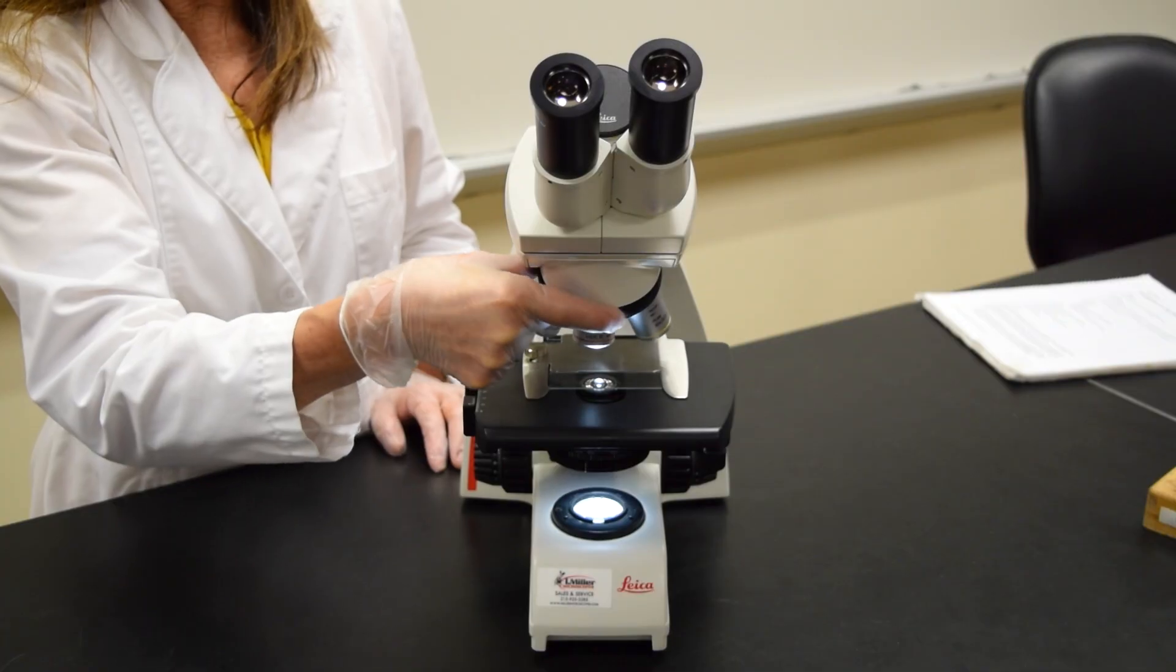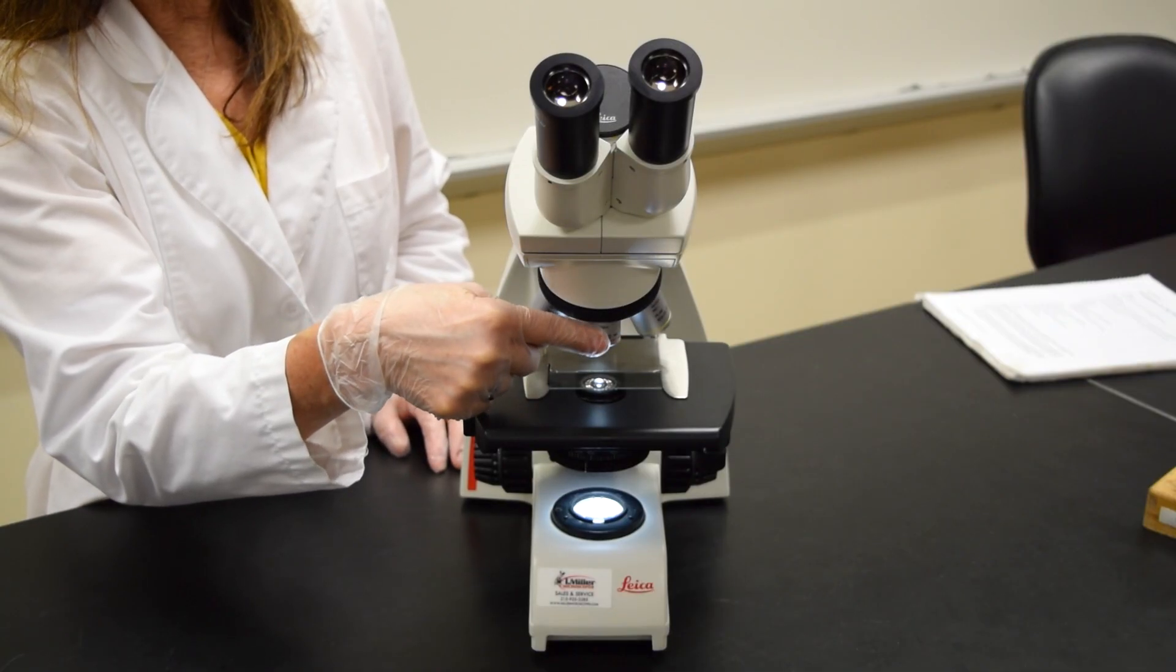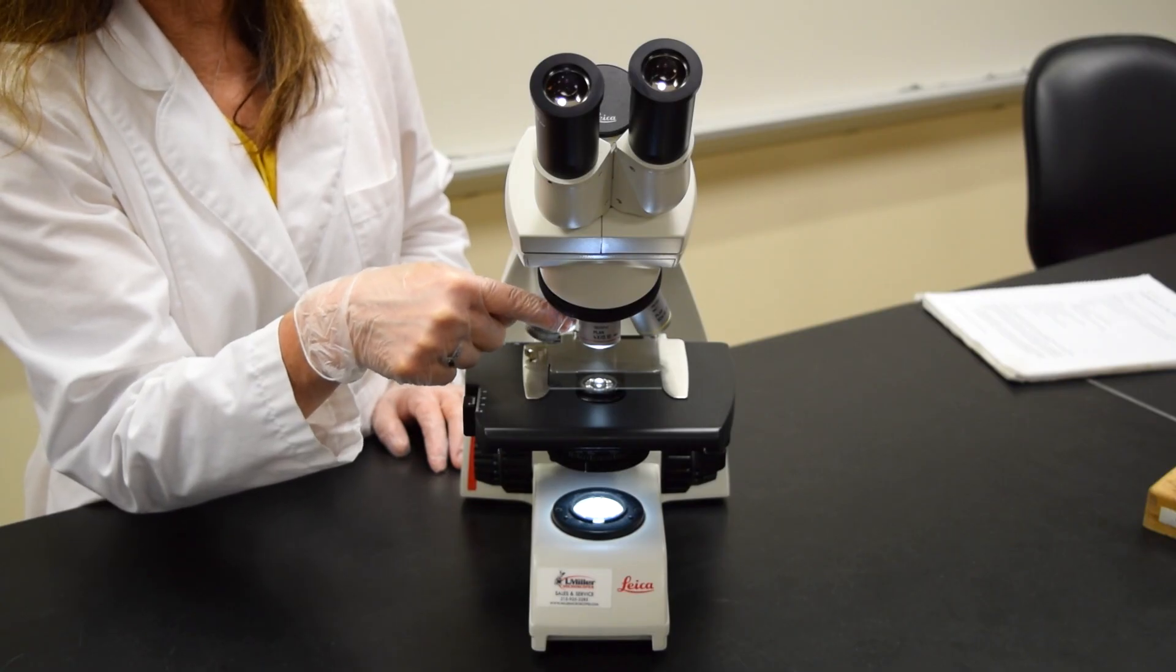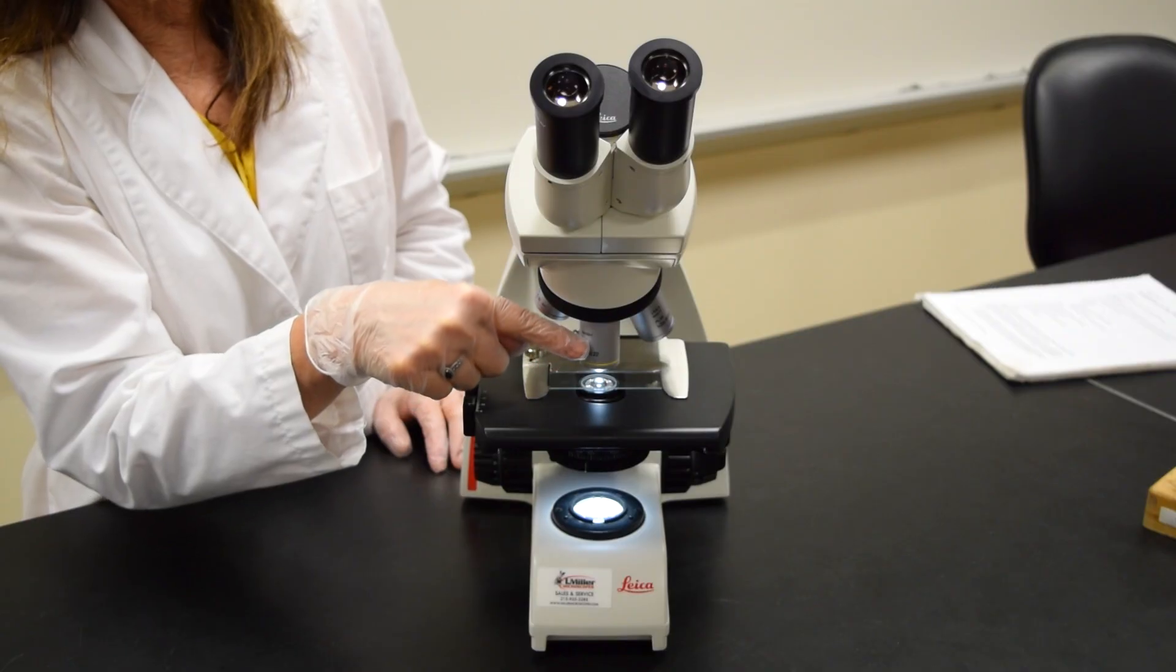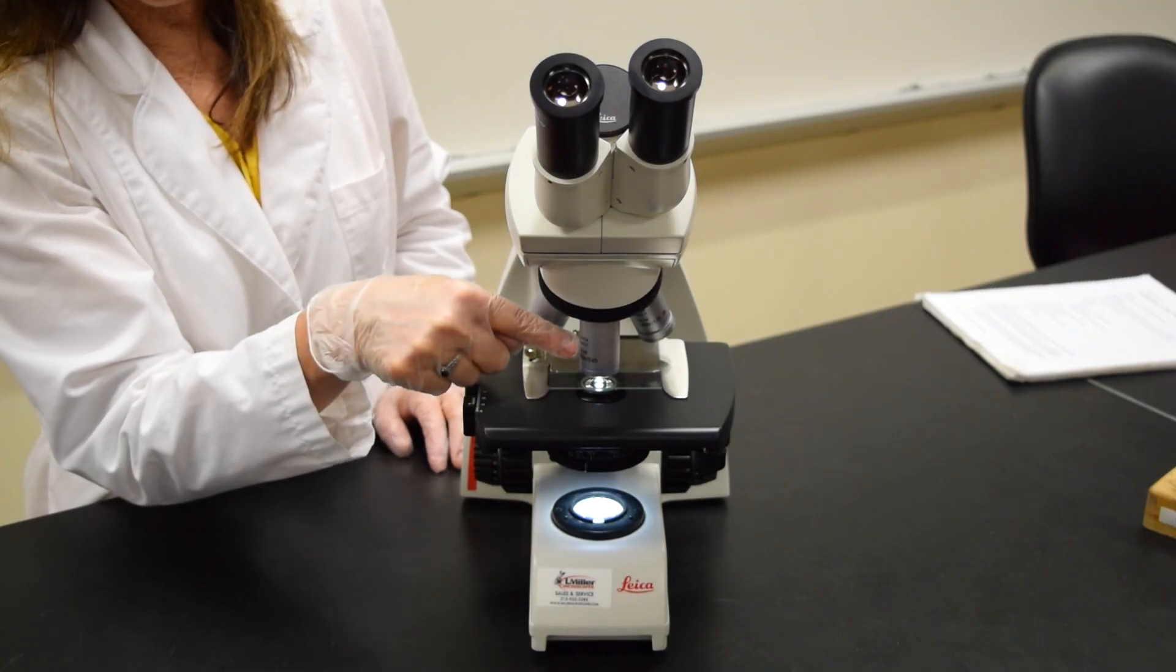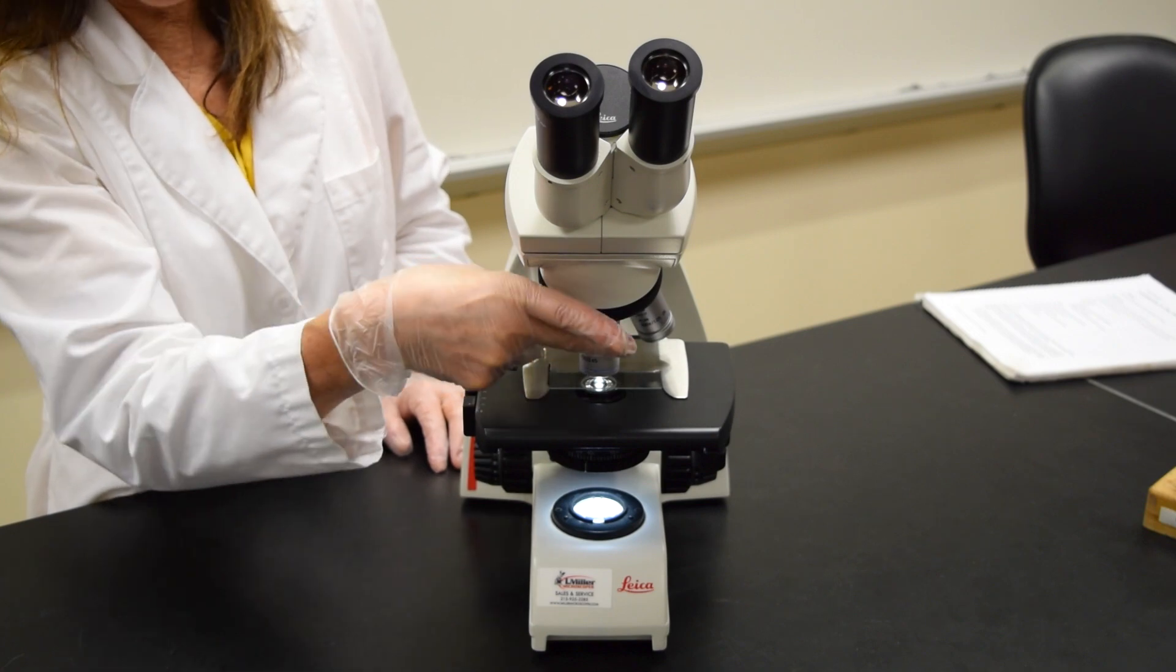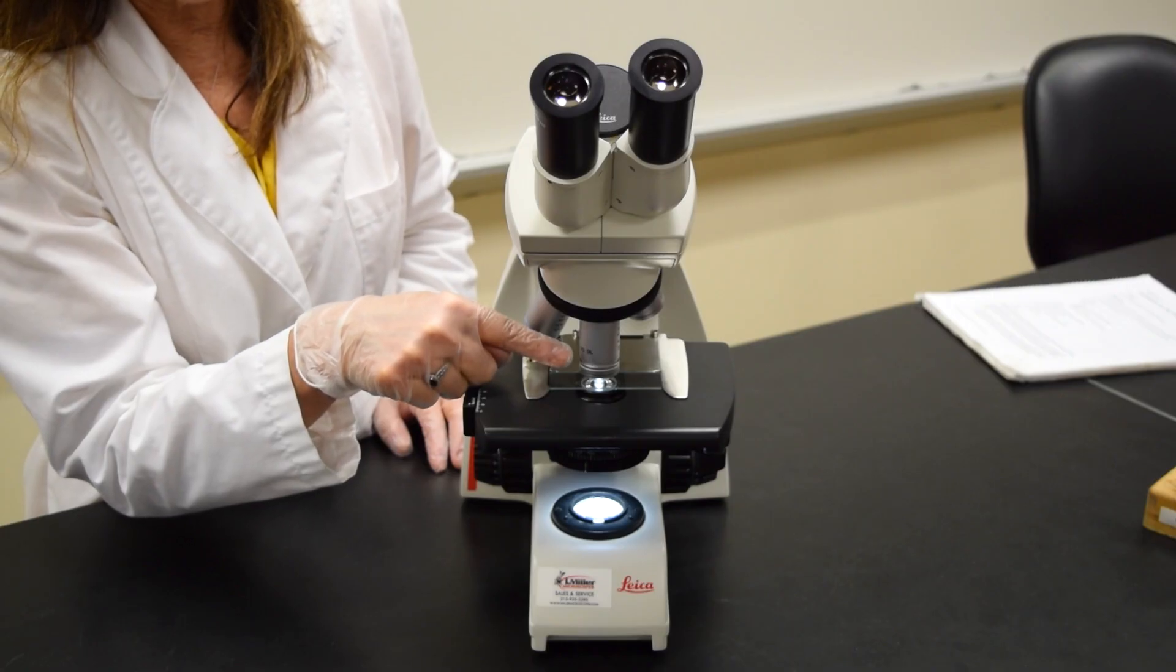We have our revolving nose piece that consists of four objectives. The scanning power with a red color-coded band, the low power objective with a yellow color-coded band, the high power objective with a blue color-coded band, and then finally, the oil immersion lens with a white color-coded band.